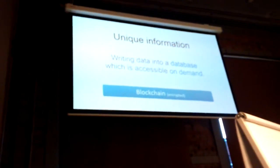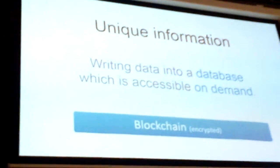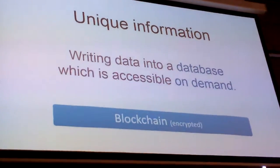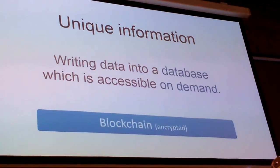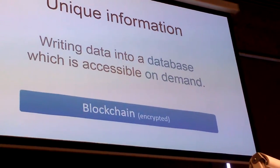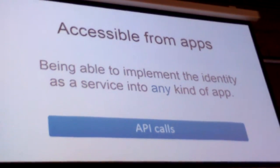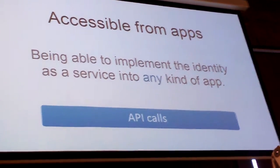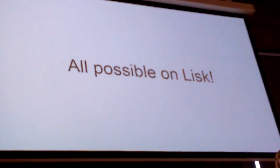In terms of unique information, it's like writing data into a database which is accessible on demand. Unlike the social network where status updates are open and everyone can see them — no, this information you have to decrypt in order to allow an app to access it. It should be used for authorization: you should be able to hook in with your identity and prove ownership — proving that you are this person. And accessible from all apps, meaning you can implement it into any kind of centralized system via simple API calls. This is all possible on Lisk as well, and these are called blockchain services.